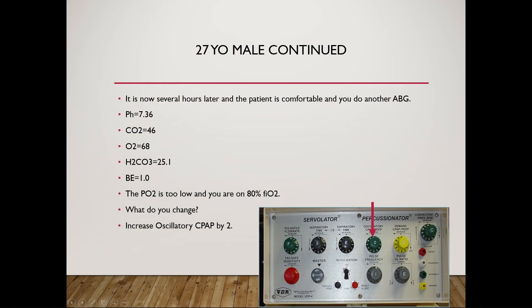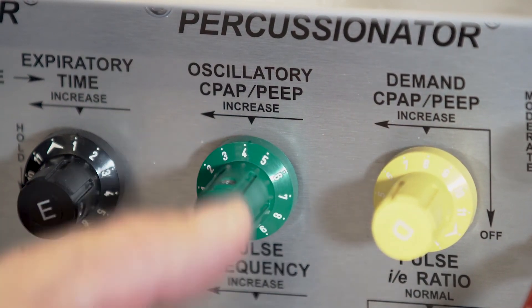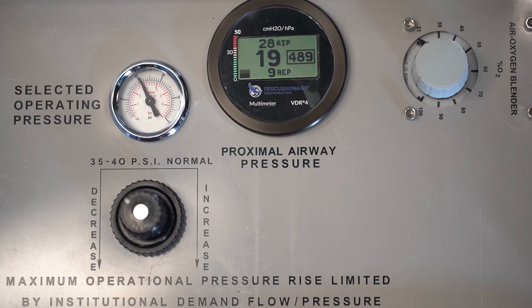It's now several hours later and the patient's comfortable and we're going to do another blood gas. I've got a pH of 7.36, a CO2 of 46, a PO2 of 68. So now I've got really good CO2 clearance but my PO2 is not so good. So what am I going to adjust? Because I'm on 80% FiO2 so I don't really want to manipulate my FiO2 anymore. So what am I going to change? I'm going to increase the oscillatory CPAP by 2. So I simply come over to the oscillatory CPAP. I knew that I was on 8 and I'm going to go to 10 now. I make an adjustment. I wait a couple breaths. I can see it's went to 9, 10, there we go. So now I've made an adjustment, a primary adjustment to affect CO2 and I've made a secondary adjustment now to affect oxygenation. I simply increase these flows in two centimeter or increments to affect either oxygenation or CO2.